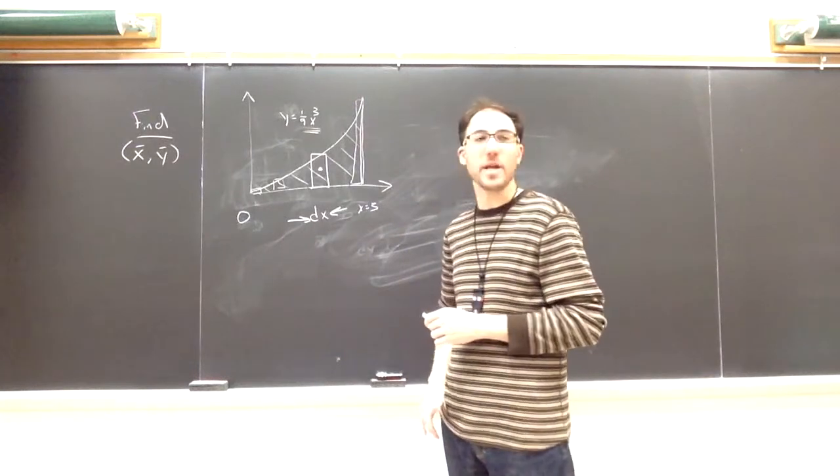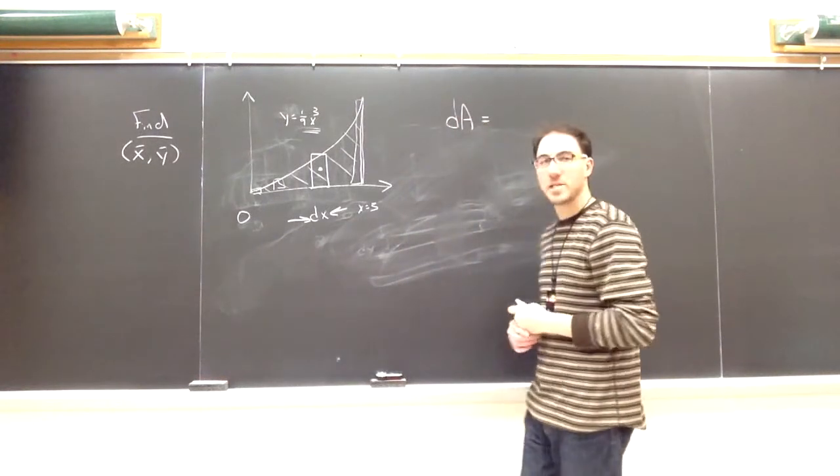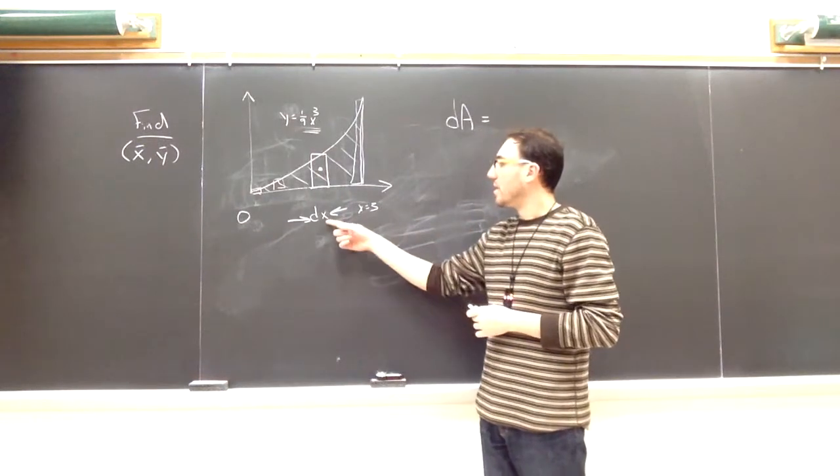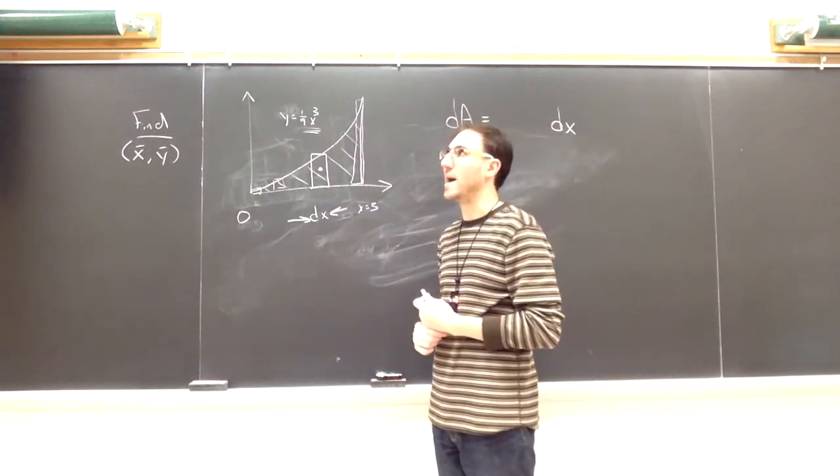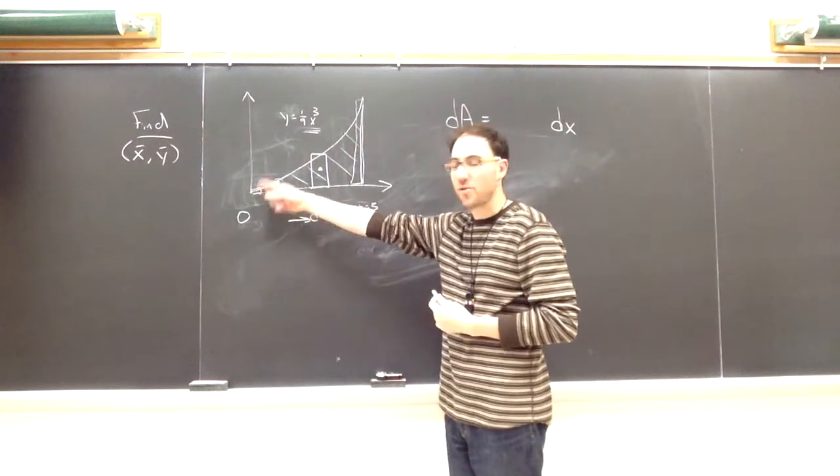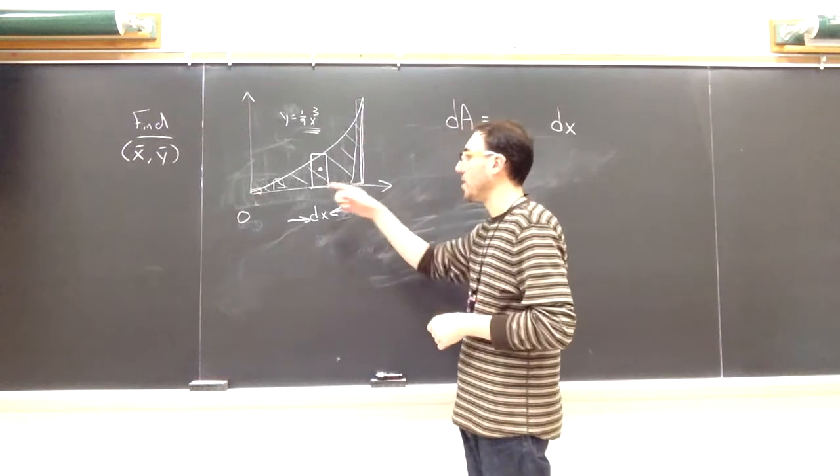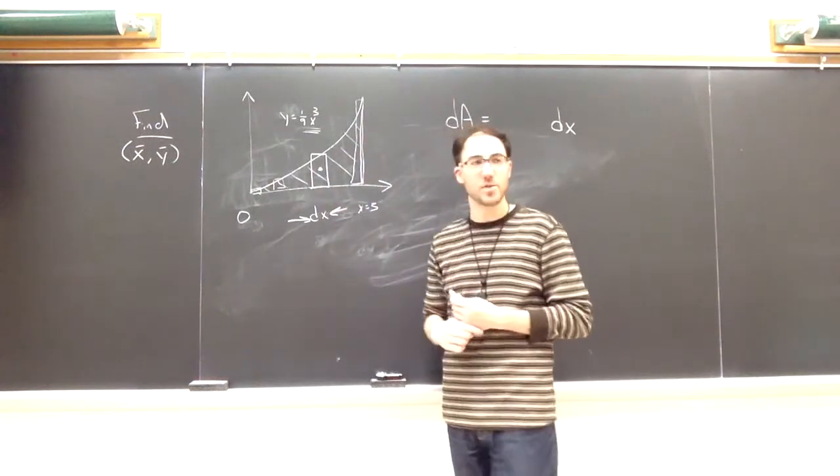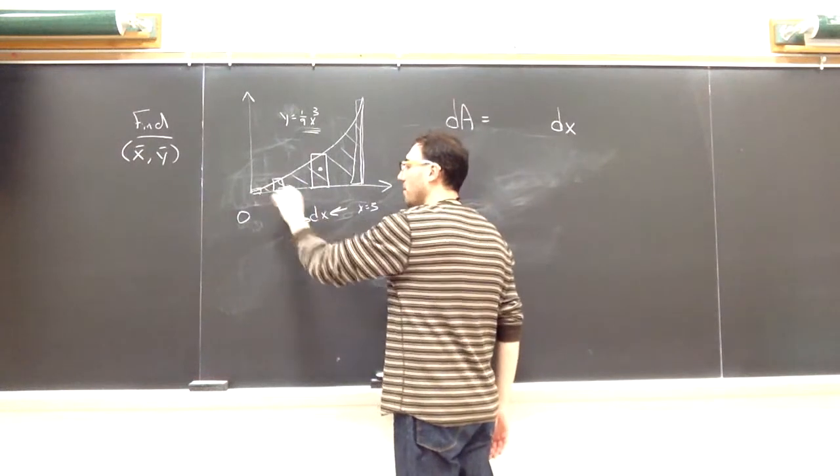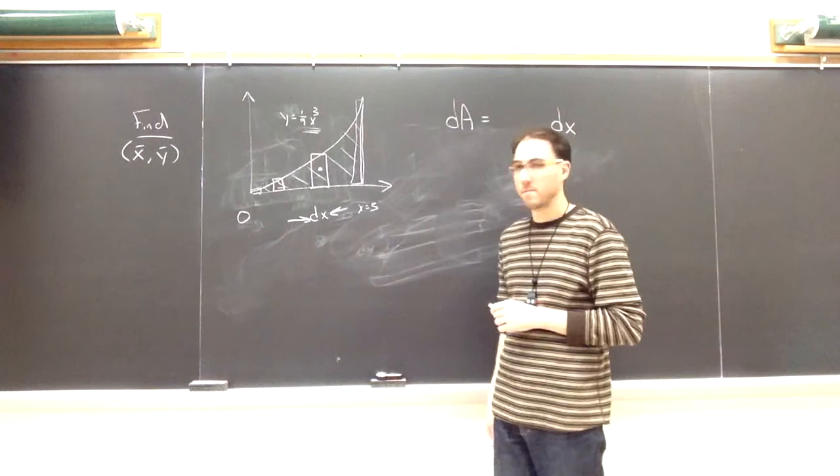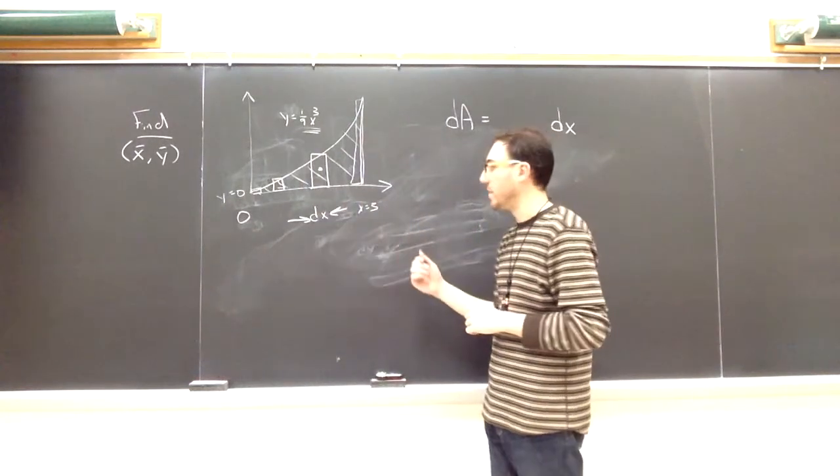So vertical strips are going to be easier to work with here. What I need to find is the area of any strip, which is going to be its height times its width. The width of every strip is dx. So I have to determine the height of every strip from the leftmost to the rightmost. If I know where the bottom and top of any strip are located, then the difference between the two will give me that height. For this particular problem, where is the bottom of every strip located? They're all at y equals zero. So that's easier. They all share that.